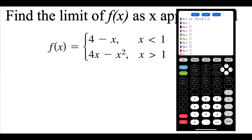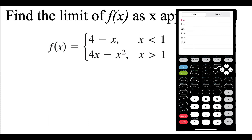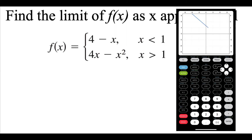I can also put the other function in at the same time. I use a set of parentheses and type 4x minus x squared, then put the divided by symbol in and set x values bigger than 1 — inside parentheses, x, second math, bigger than 1. When I hit graph, I see both graphs drawn out over their specified domains.